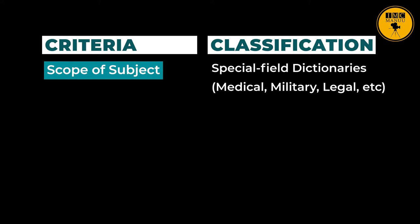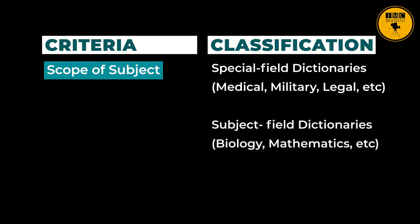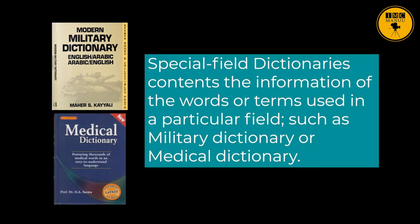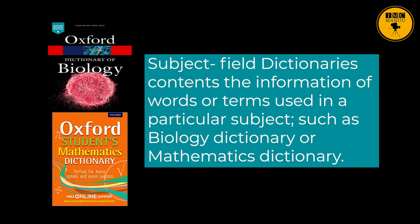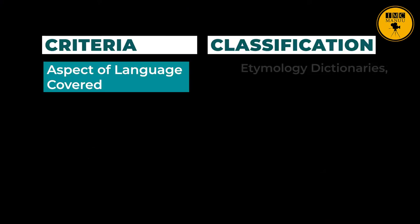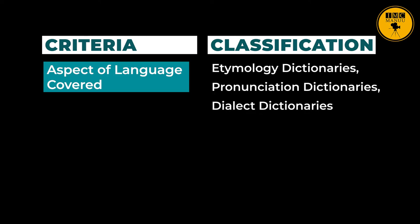According to the scope of subject, there are two major types of dictionaries: Special Field Dictionaries and Subject Field Dictionaries. Special Field Dictionaries contain information of words or terms used in a particular field, such as Military Dictionary or Medical Dictionary, covering the entire field and all its related terms. According to the aspects of language covered, the types are Etymology Dictionaries, Pronunciation Dictionaries, and Dialect Dictionaries.